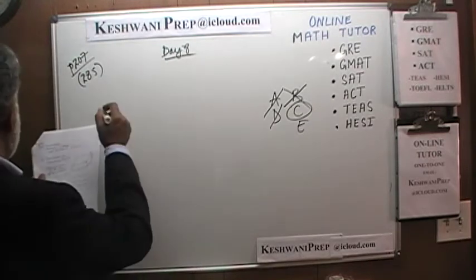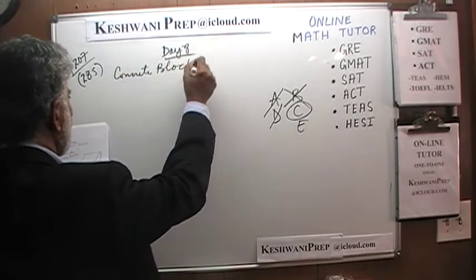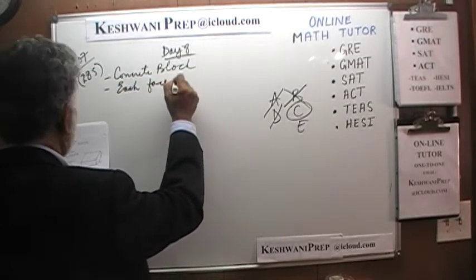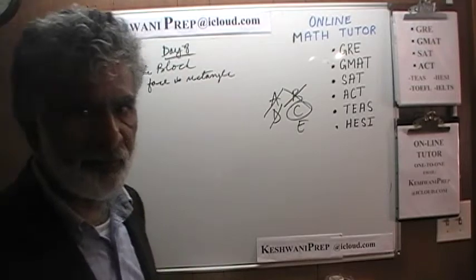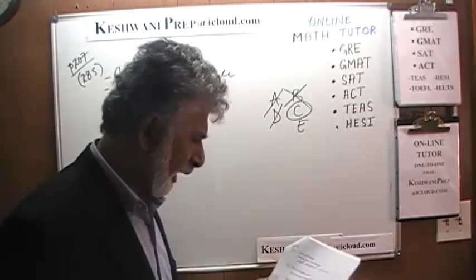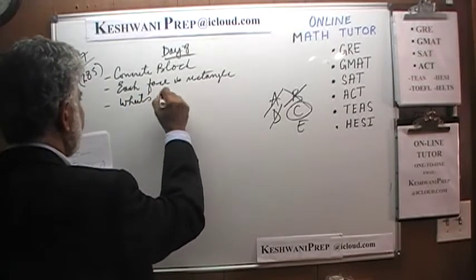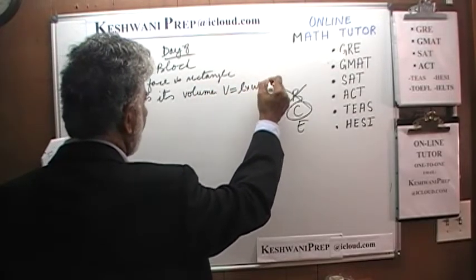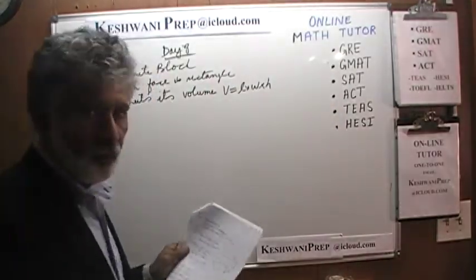Problem 286 says we have a concrete block where each face is a rectangle — in other words, it is a rectangular box. The question is: what is its volume? Volume requires length times width times height, and that is what we need to figure out.